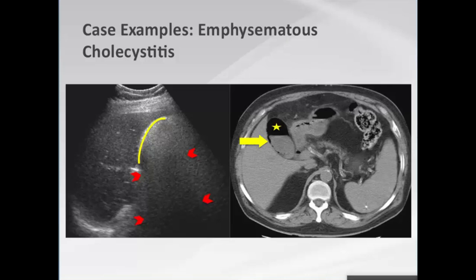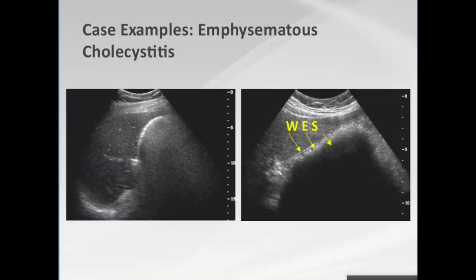If you're unsure — and it can be difficult with ultrasound to confidently make the diagnosis — have a very low threshold for proceeding to confirm, as in this case showing gas in the gallbladder lumen and gas in the gallbladder wall on CT.